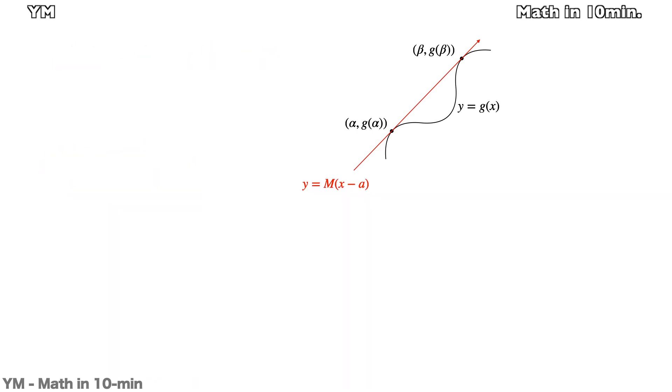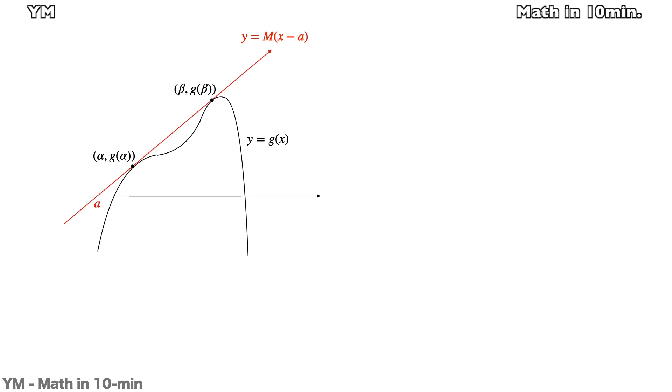Now, let me draw the graphs again. Approaching this graph is a key point of solving this problem. Eventually, g(x) has a tangent line which is tangent to both (α, g(α)) and (β, g(β)) and passes (a, 0) as an x-intercept.